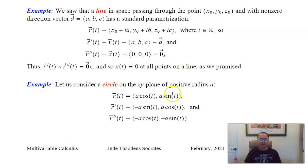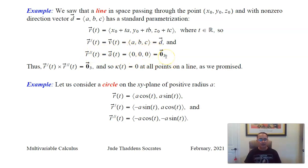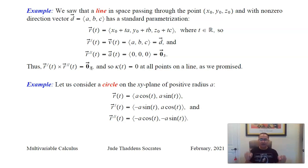Let's explore curvature a little deeper. For a line: the velocity is just a constant direction vector, the acceleration is the zero vector, so the cross product is automatically the zero vector as well. The curvature is zero because the zero vector has zero length. This makes sense — if you're moving along a line you're not turning at all.